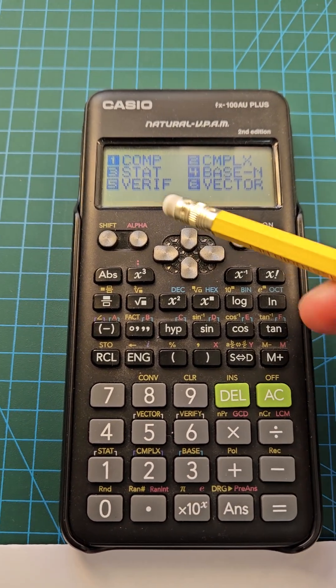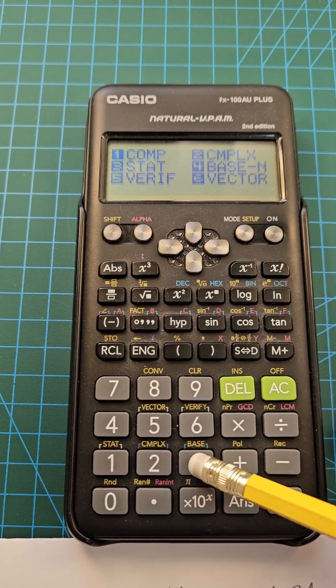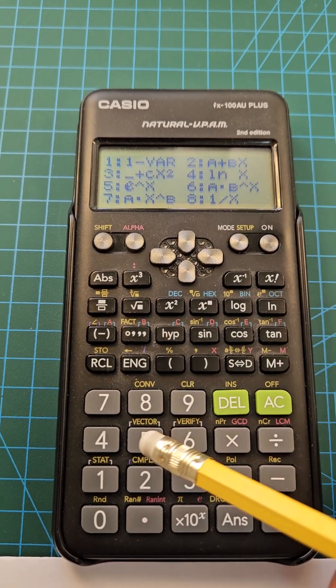Press mode and then option three stat, and then option one one var.